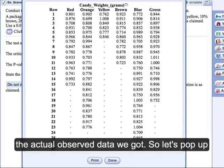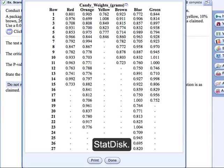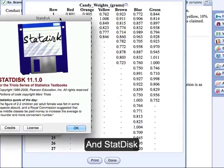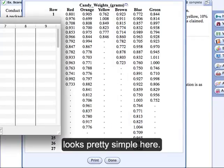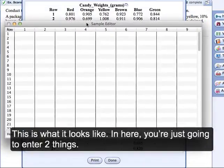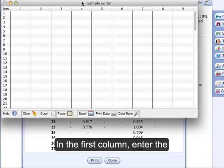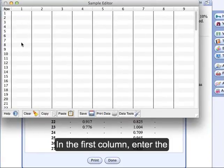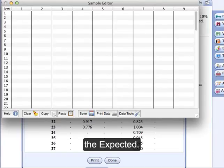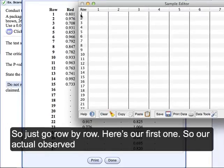So let's pop up StatDisk. It looks pretty simple here. So this is what it looks like. And then in here, you're just going to enter two things. The first column, you're going to enter the observed data, and then the second one, you're going to put in the expected.